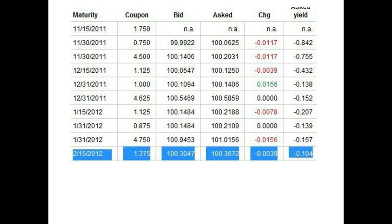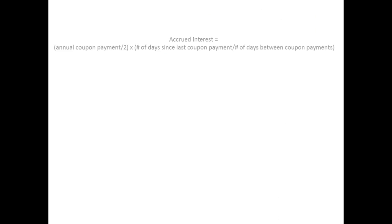Accrued Interest and Quoted Bond Prices. The bond prices that are quoted are not the actual prices that investors will pay for the bonds. The quoted prices are the price someone would pay if they bought the bond on the coupon date. The quoted price does not compensate for the accrued interest that the seller has earned up until he sells the bond.